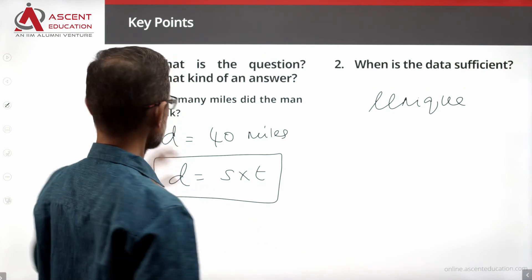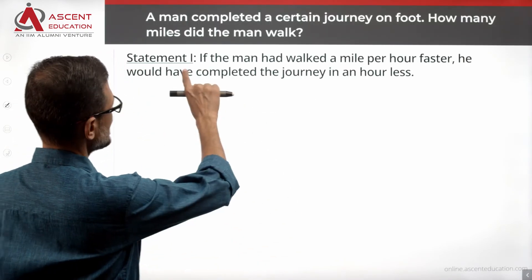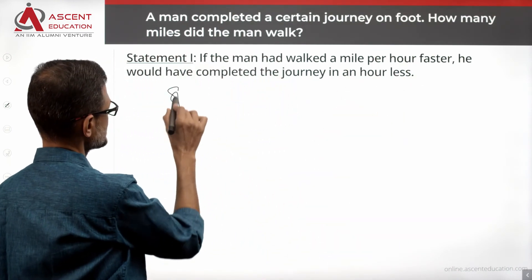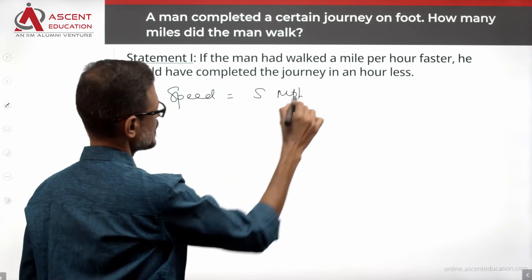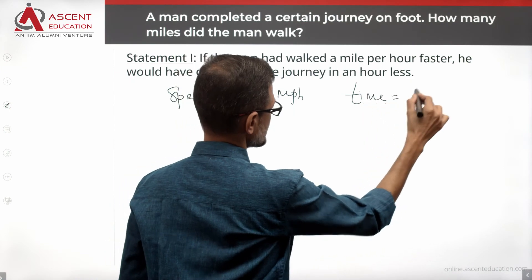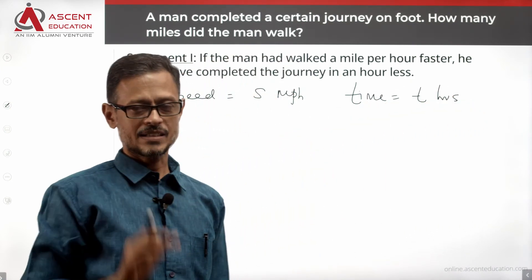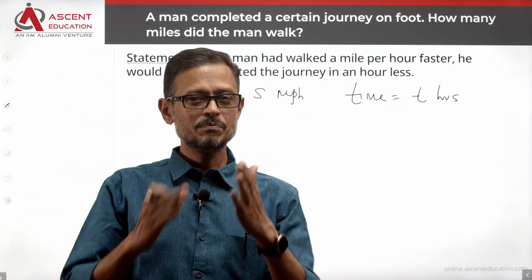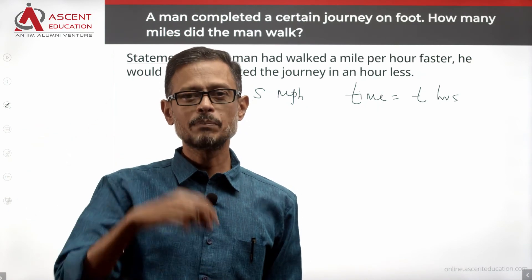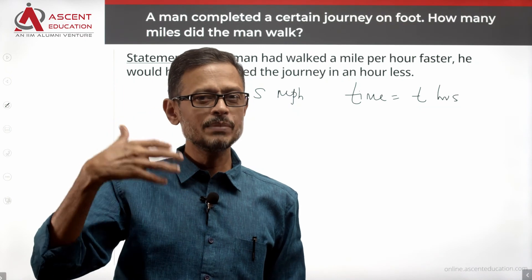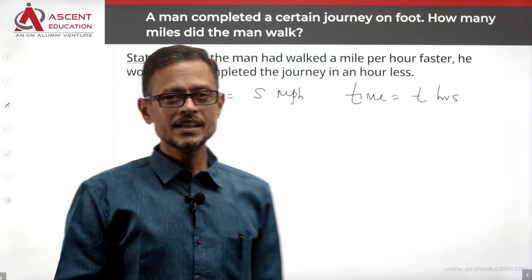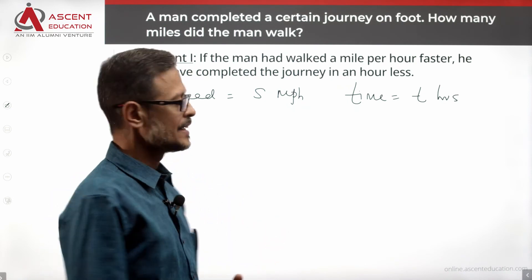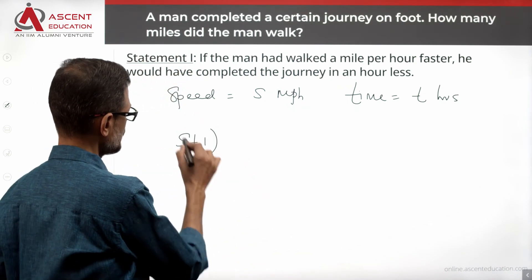Let's evaluate statement 1 alone. Let's assign two variables: the speed at which he is walking is S miles per hour, and the time he takes to cover the distance is T hours. Statement 1 says: if the man had walked a mile per hour faster, he is walking at S plus 1 miles per hour.